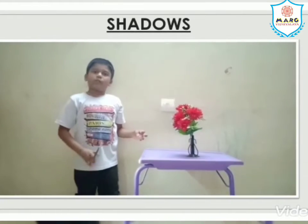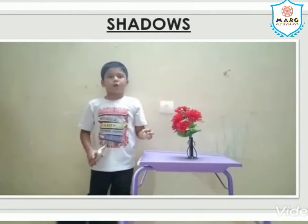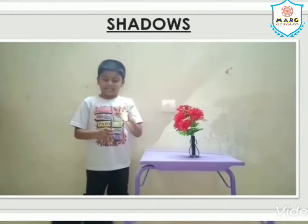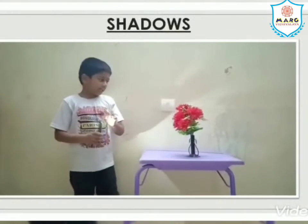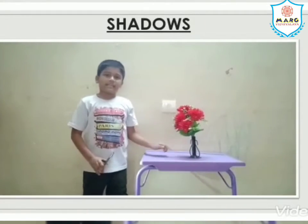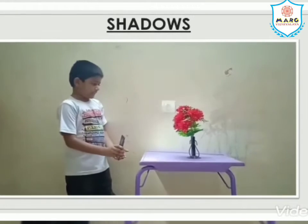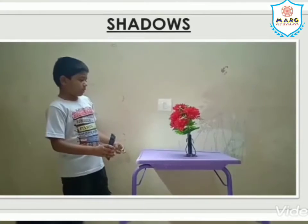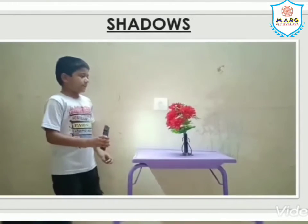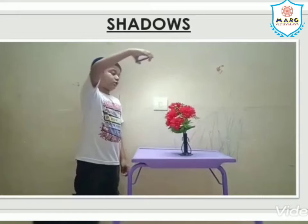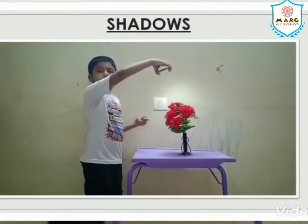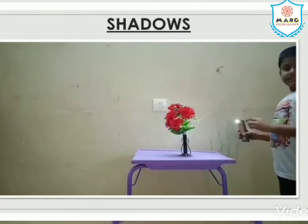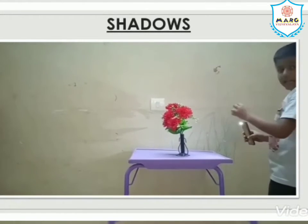Now let me show you how shadow is formed in different ways during the day. Think of this flashlight as a sun and this object as a tree. When the sun is low in the early morning, the shadow is longer. When the sun is on top of the object, the shadow is smaller. And when it is evening again, the shadow will be longer again.